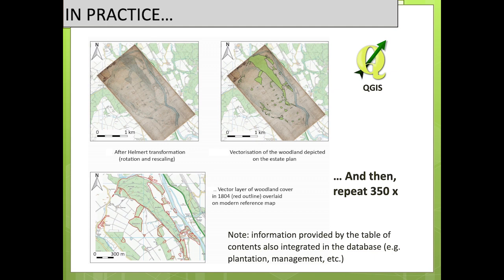The second step is what we call transformation. There are different mathematical methods to transform. I went with the most simple one — rotation and rescaling — because I wanted to keep the spatial information by the surveyors as close to original as possible, without creating any artificial deformation to force the map to overlay on the modern reference. In some cases I used affine transformation, which allows some stretching to compensate if the map has some alteration over time — if it has shrunk or stretched a little bit.